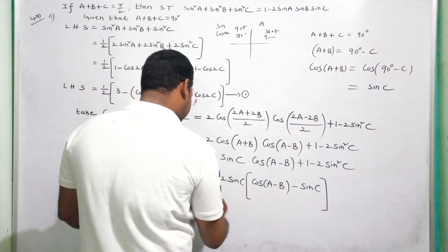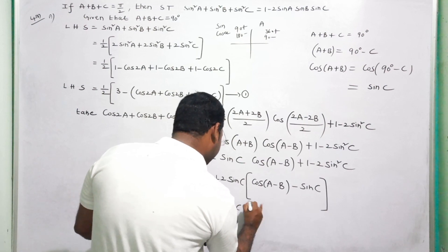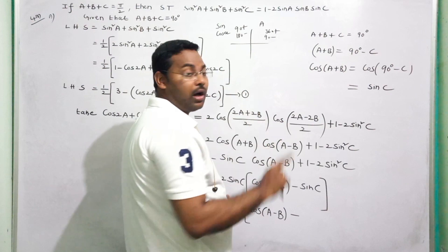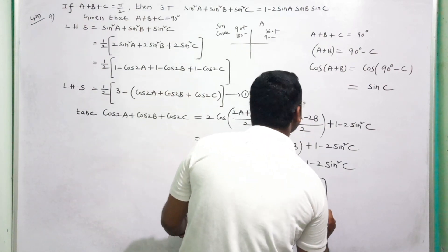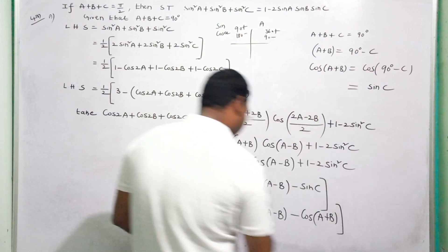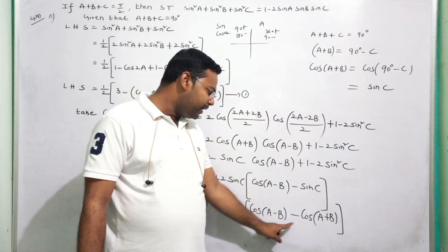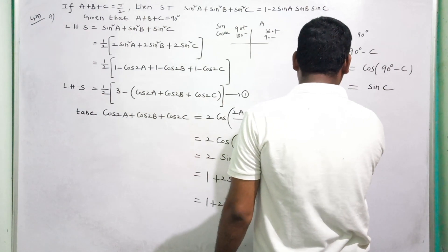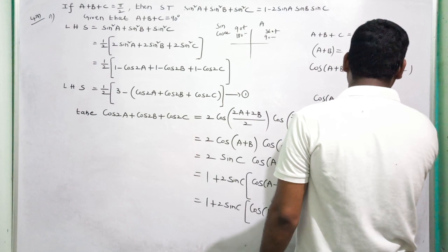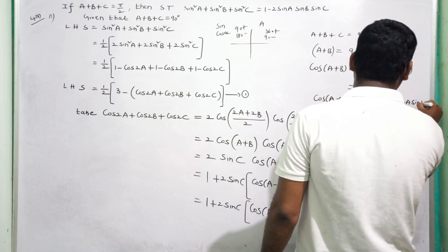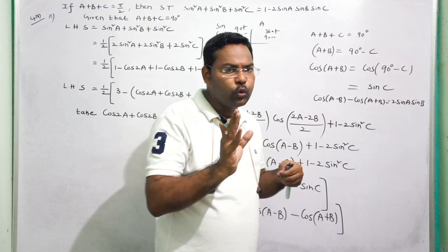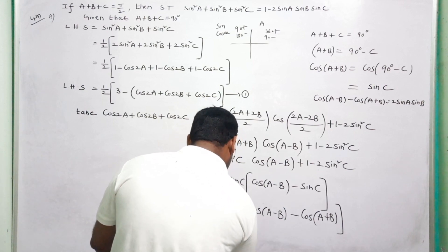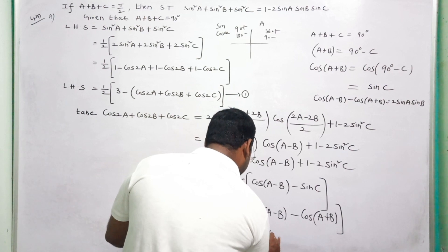This simplifies to 1 plus 2 sinC cos(A-B) minus 2sin²C, which equals 1 plus 2 sinC [cos(A-B) minus sinC]. Now, sinC equals cos(A+B) can be rewritten, and using the formula cosA minus cosB gives 2 sinA sinB: cos(A-B) minus cos(A+B) equals 2 sinA sinB. So we get 1 plus 2 sinC times 2 sinA sinB, which equals 1 plus 4 sinA sinB sinC.